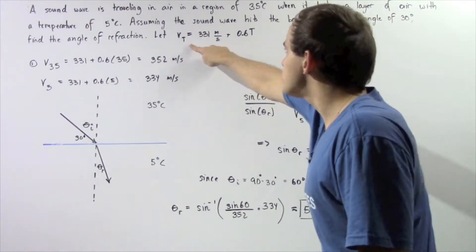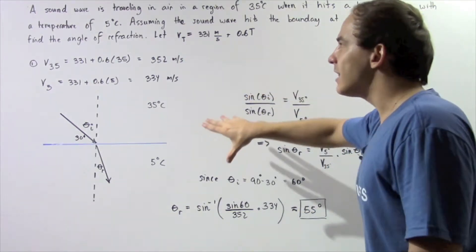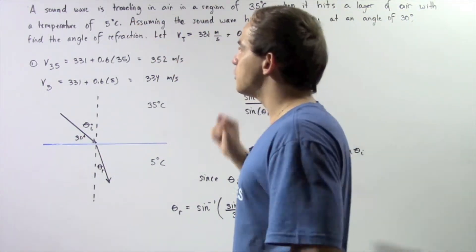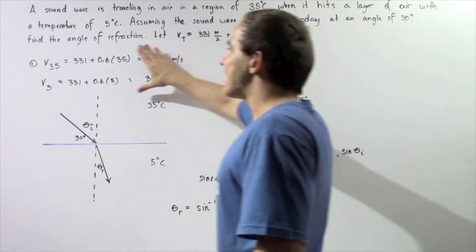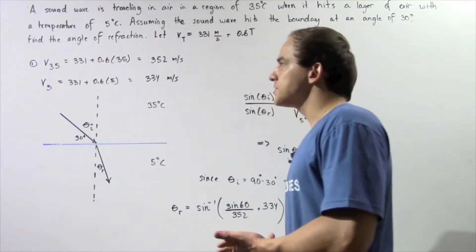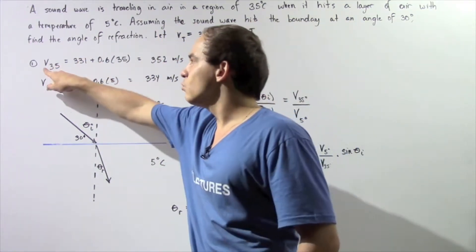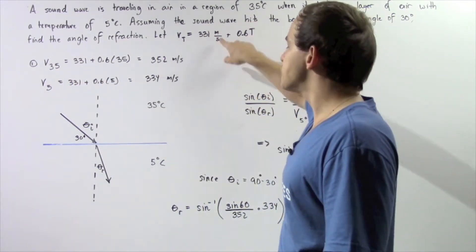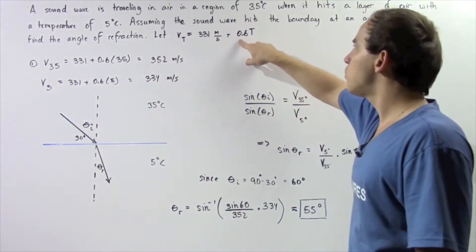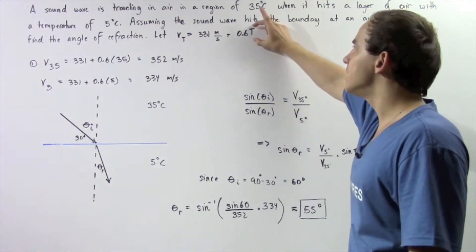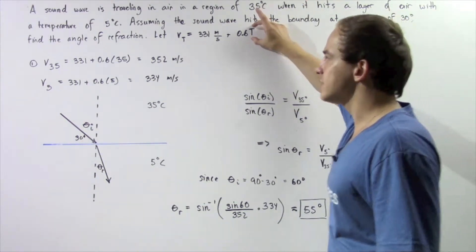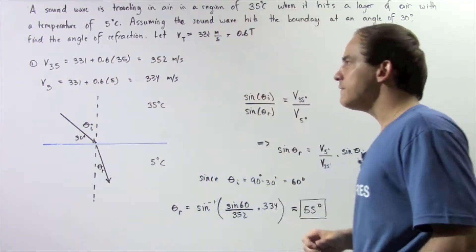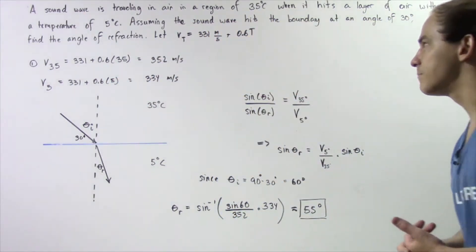We want to use this equation to calculate the velocity at 35 degrees Celsius and at 5 degrees Celsius, and that's exactly what we do in the first step. So the velocity when our temperature is 35 degrees is equal to 331 meters per second plus 0.6 multiplied by the degree measured in Celsius. So 0.6 times 35 gives us 352 meters per second.